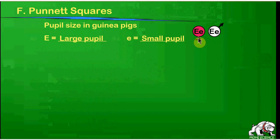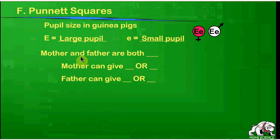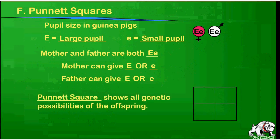Over here we have symbols — the female symbol and the male symbol. Both of these guinea pigs have capital E and lowercase e. If I ask what the phenotype of these guinea pigs is, you would say they would have large pupils because of the capital E. So both are large-pupil guinea pigs, but both carry the recessive trait for small pupil. When these genes are passed on, each parent gives only one of their two genes — the mother will give either capital E or lowercase e, and the father will give either capital E or lowercase e.